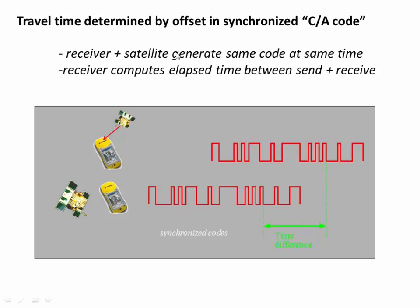How is that travel time actually established? The satellite and your handheld receiver are both generating a CA code — a binary code that looks something like a bar code — and they're generating this code at the exact same time. If your handheld GPS generates the code at a certain time and then receives a code from the satellite, the offset between those codes is a function of how long it took that radio wave to travel from the satellite to the receiver. By comparing the received code versus the internal code and looking at the time offset, you can estimate the travel time of that radio wave.